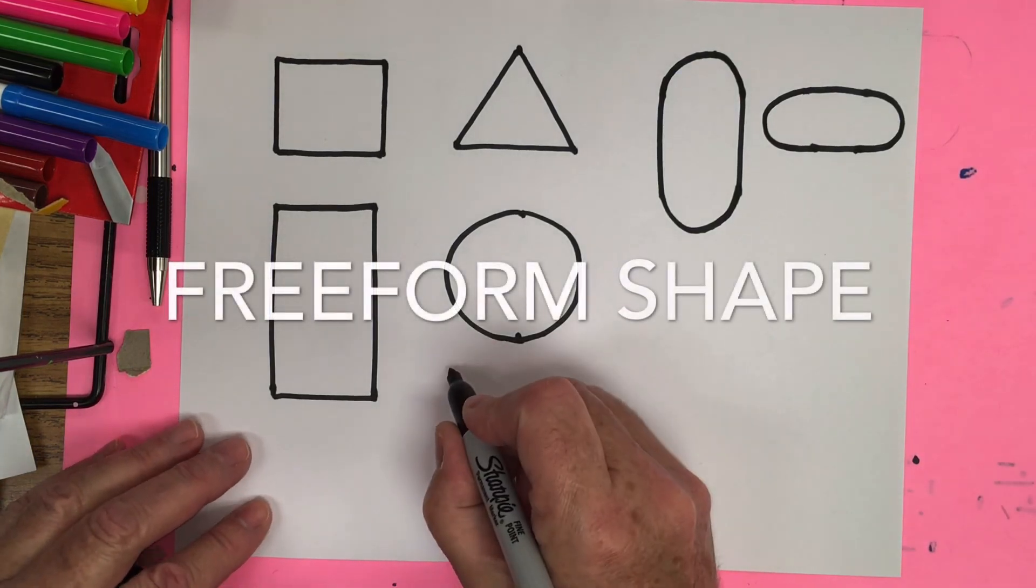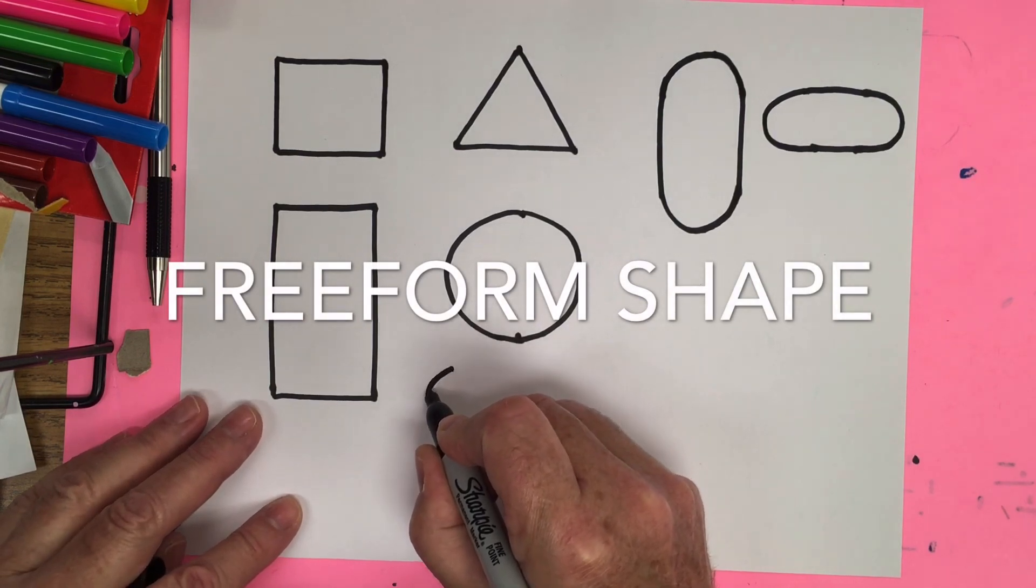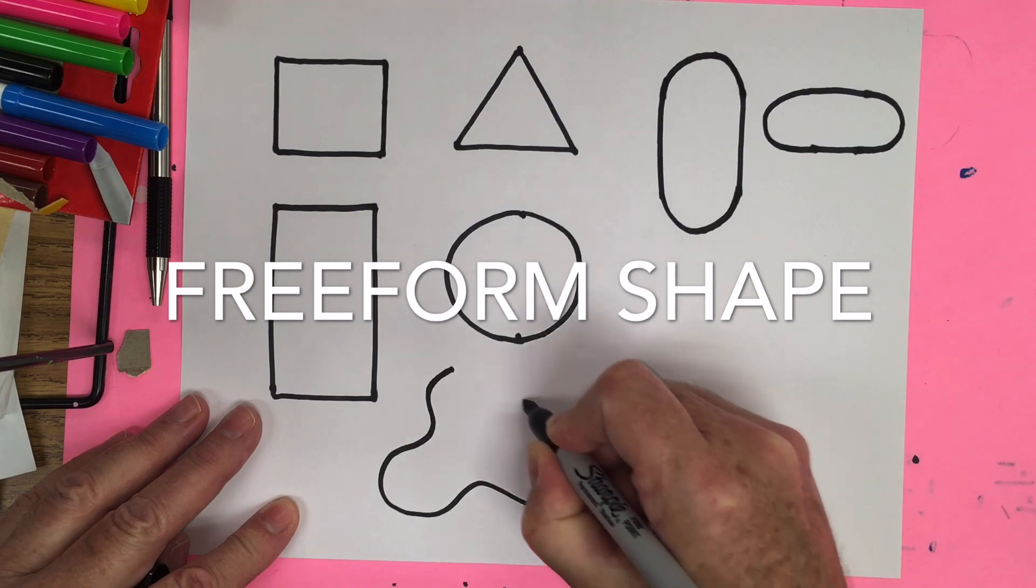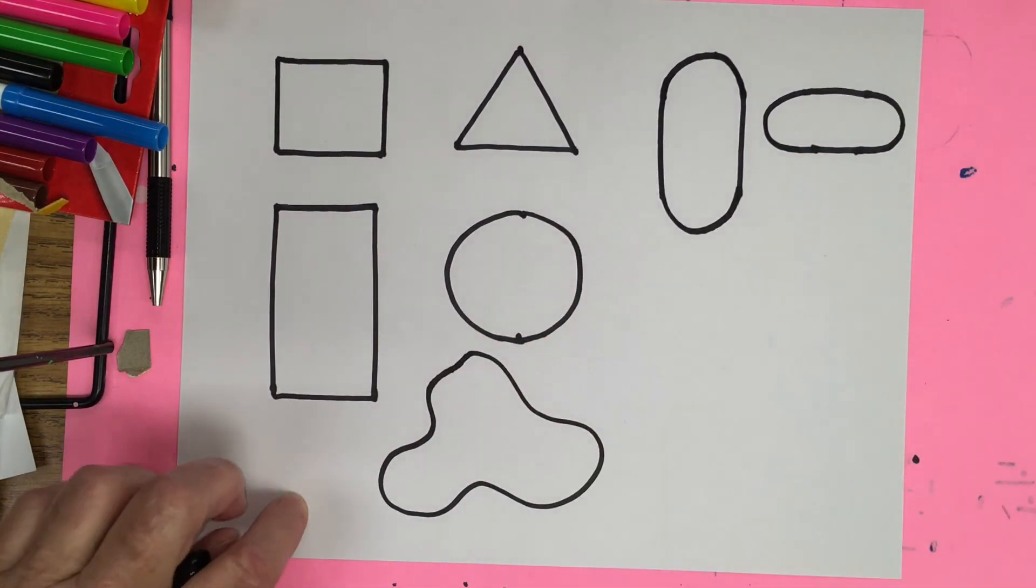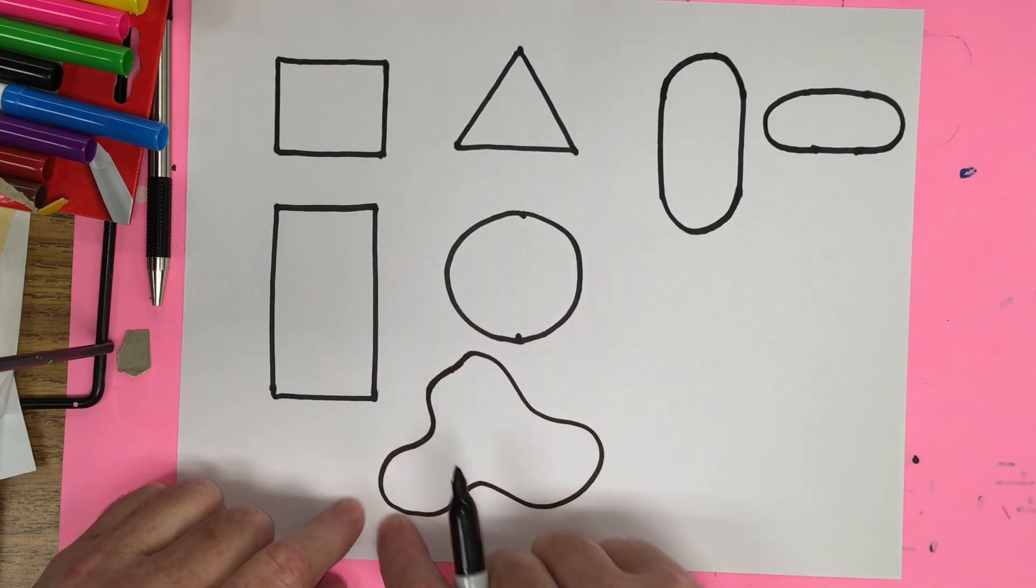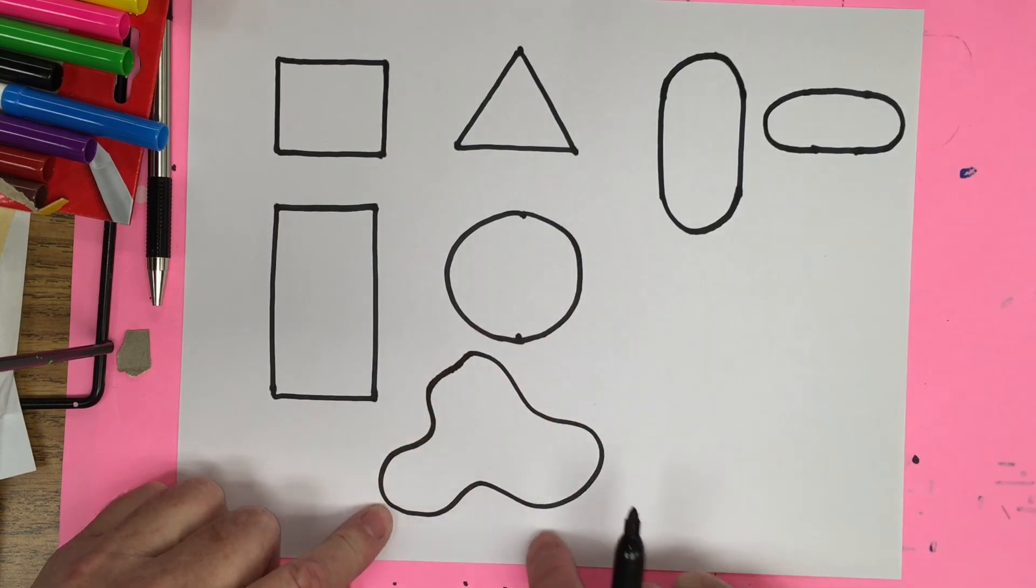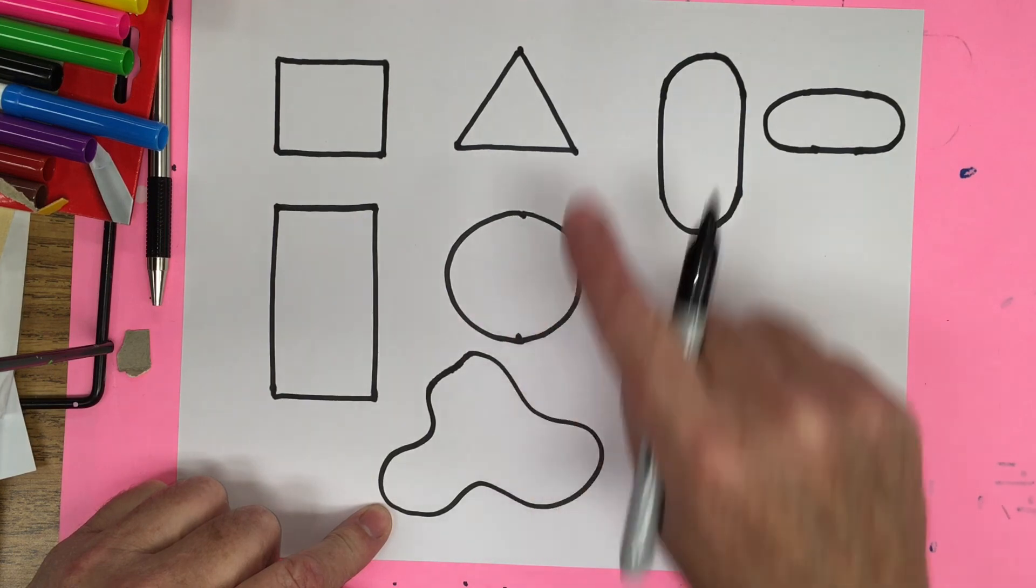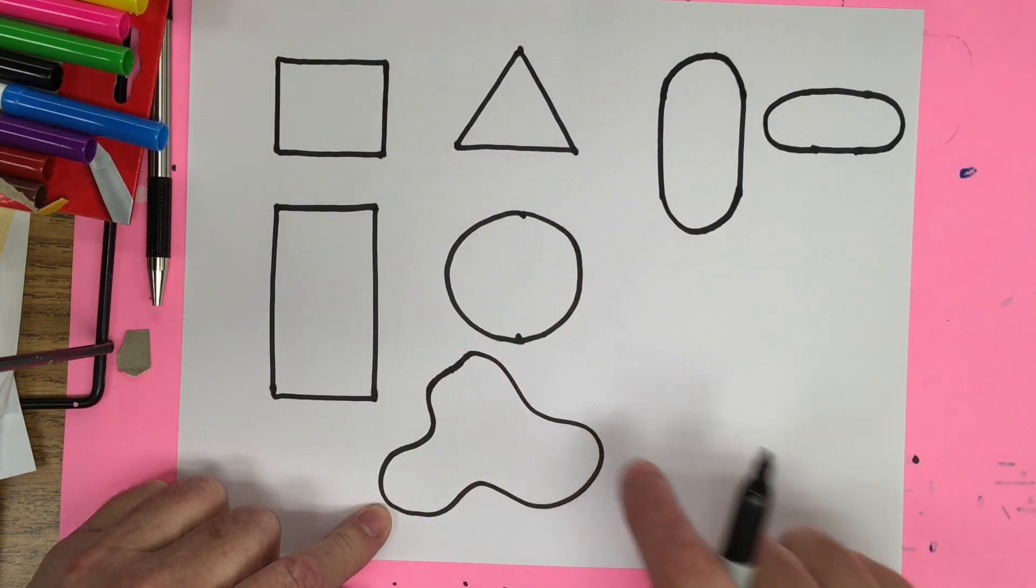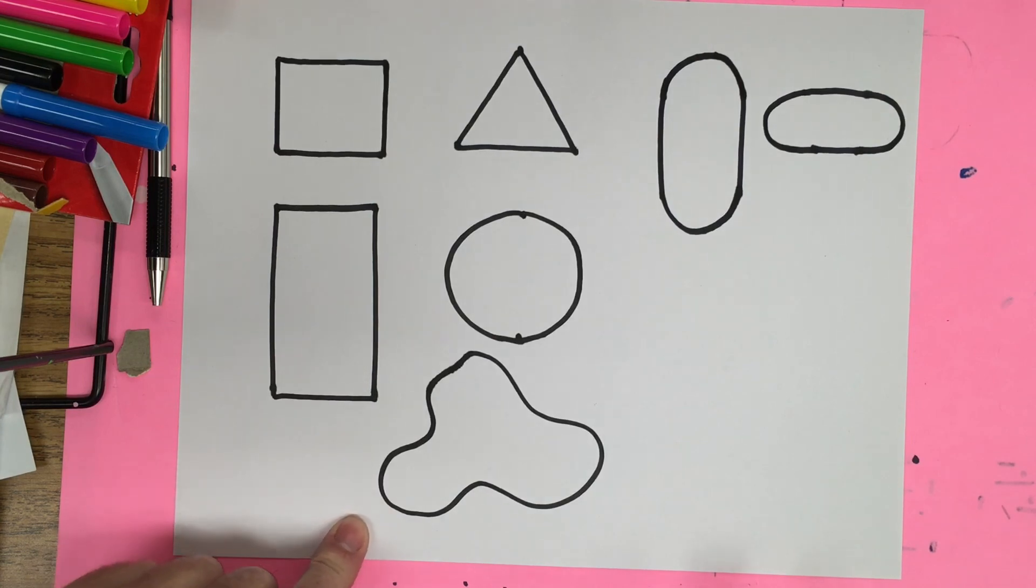It's just any wiggly wavy line. And when a line touches a line, it forms a shape. So this is just a wiggly wavy curvy shape. You can't name it. It can't be a circle or triangle or rectangle. It's what's called a freeform shape or an organic shape.